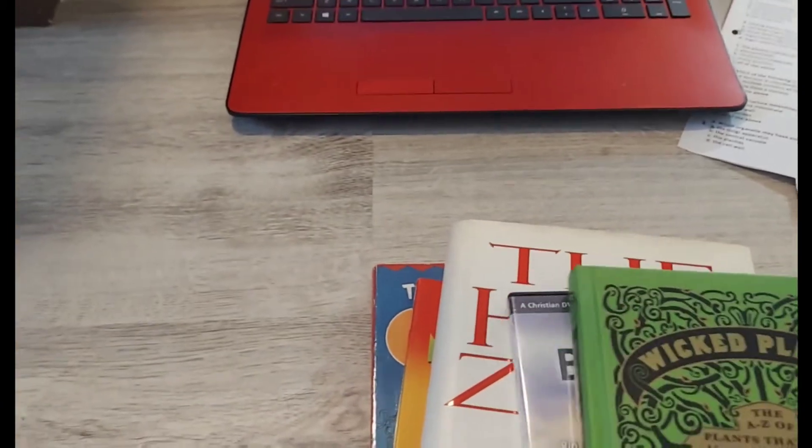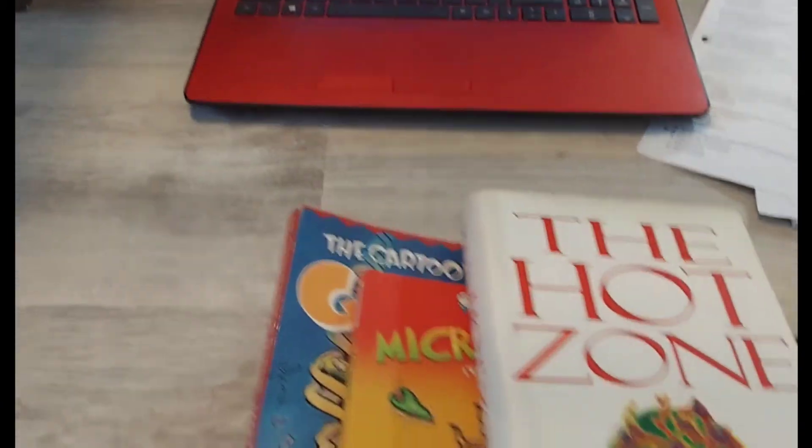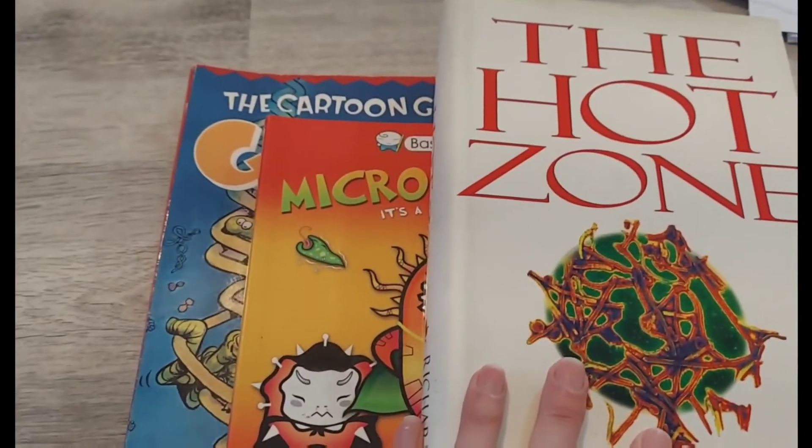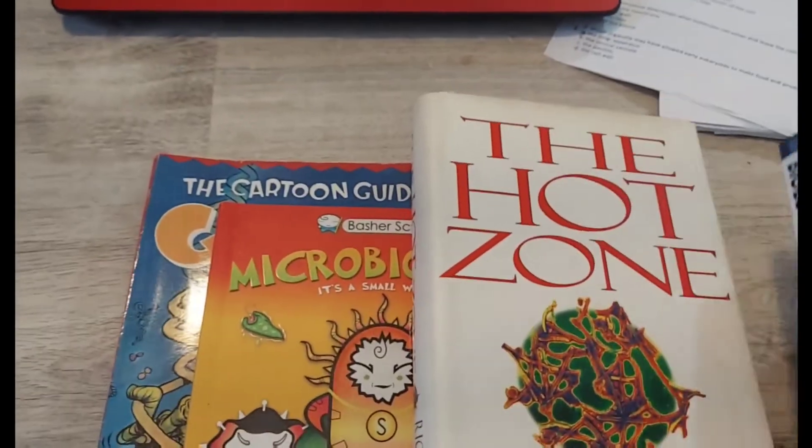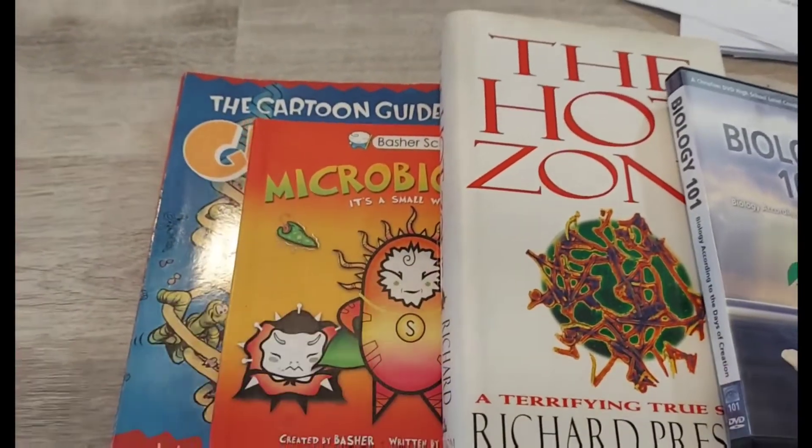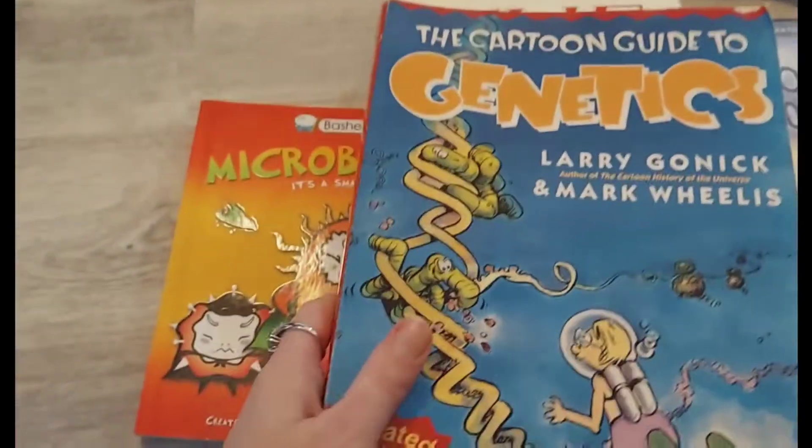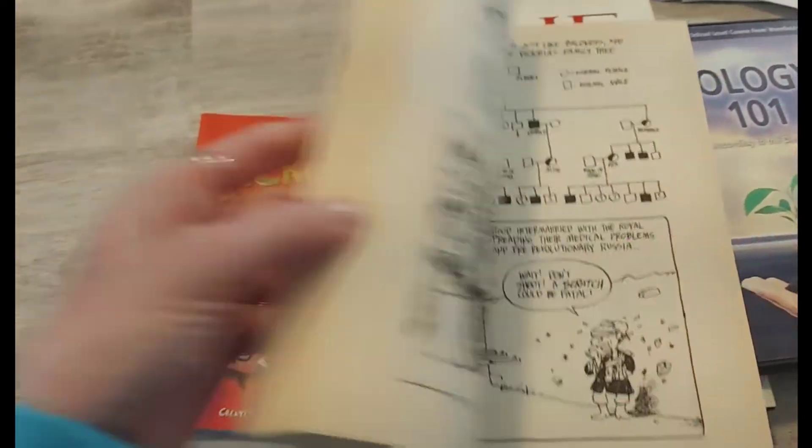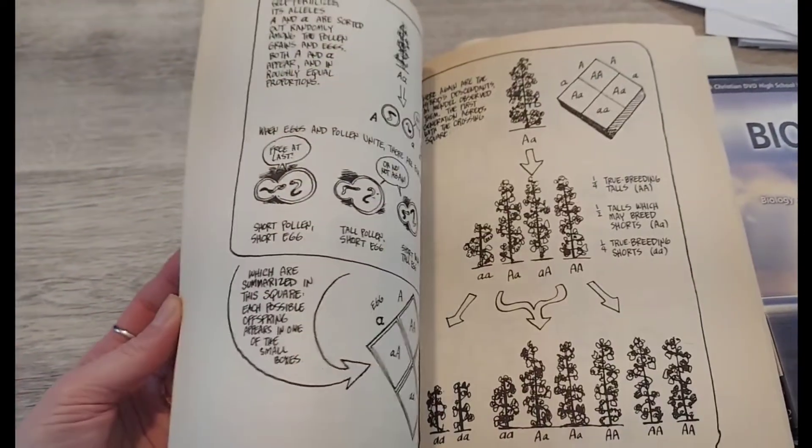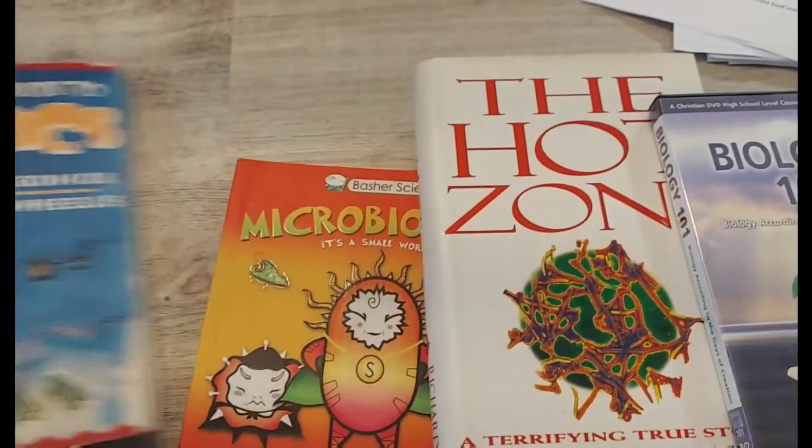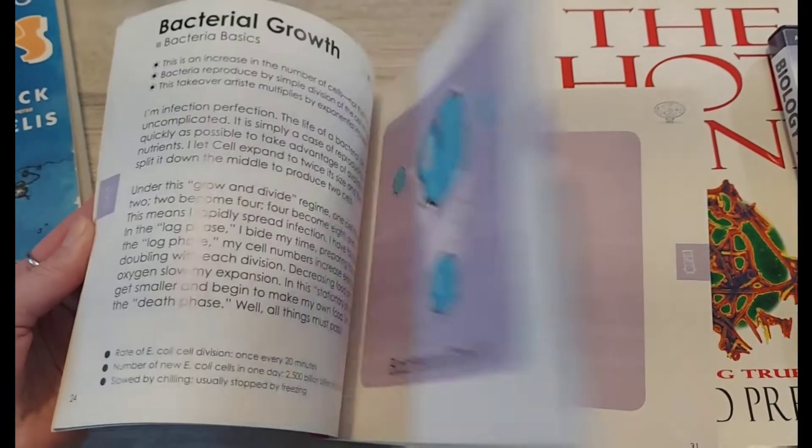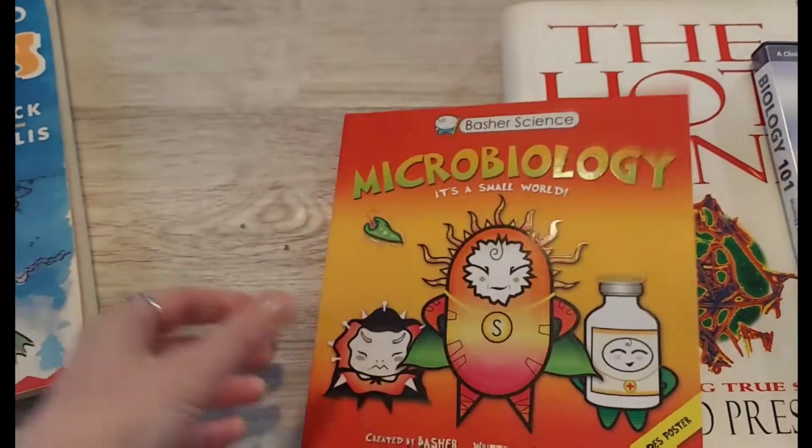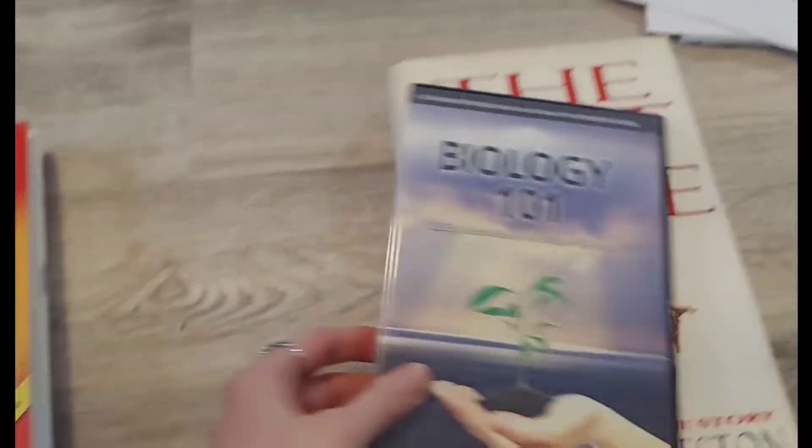In addition to that there's a lot of offline books. A lot of the books that are used I didn't purchase mainly because he doesn't have time to read all of them. And the other thing is a lot of them we got from Hoopla or YouTube or even Audible. So I don't have the physical book in front of me but he is reading more than this. Here's a few of the books. The Cartoon Guide to Genetics, Microbiology from Basher, and the Biology 101 DVD.